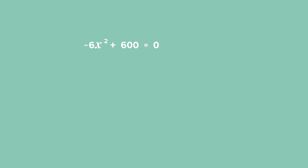Solution: We need to find the derivative of P(x). P'(x) = -6x² + 600. To maximize profit, we set P'(x) equal to zero and solve for x.